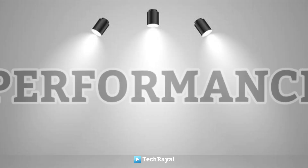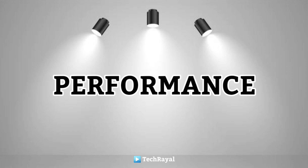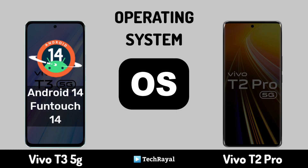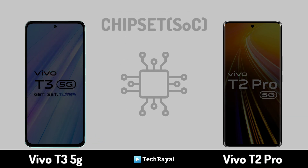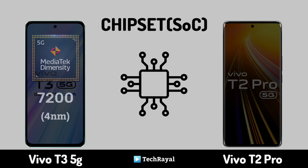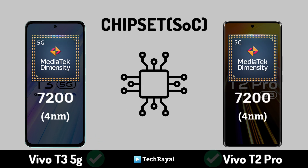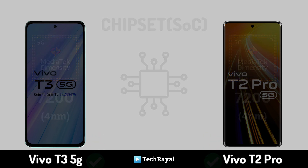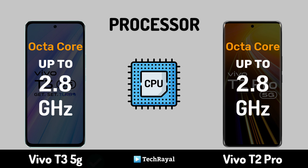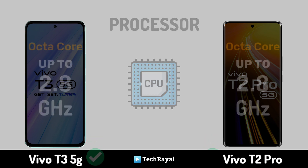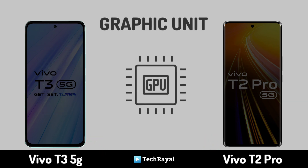Core Performance: Operating System. Chipset. Processor. Graphics Unit.